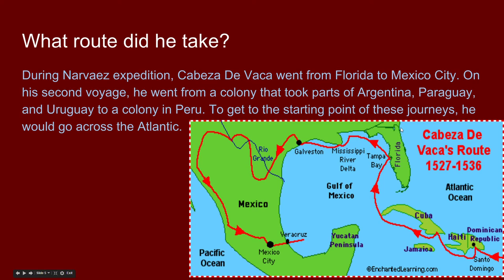As shown on the map, he went to the Dominican Republic, then Cuba, then to the west coast of Florida at Tampa Bay. They took boats to what was actually the Galveston area, then kept crossing territory until they reached the Pacific coast near Mexico City — Veracruz — and then went back home safely. This is the route Cabeza de Vaca took during the Narvaez Expedition.